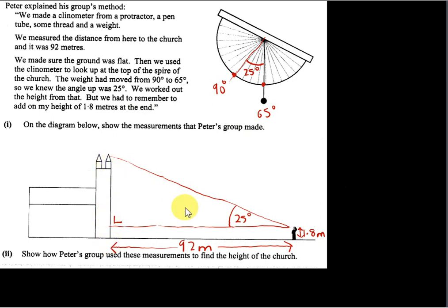So we can just use some basic right angle trigonometry here to find the height of the church. I will call the distance from here to here x. Of course, the distance from here to here is the height of Peter. So we just have to add on 1.8 at the end.